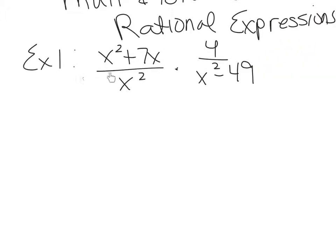Example 1 is a multiply: x squared plus 7x over x squared, times 4 over x squared minus 49. If you remember rules for fractions, rational expressions are just fancy fractions. Multiplying fractions is top times top, bottom times bottom. But it's a lot easier to simplify if you reduce first or cross-cancel. Cross-canceling involves factors, so your first step in multiplying a rational expression is going to be to factor — top and bottom on both fractions. If you don't remember factoring, check back at some of the previous videos.